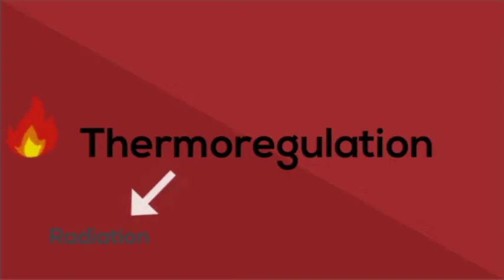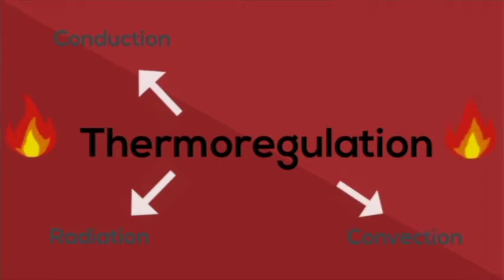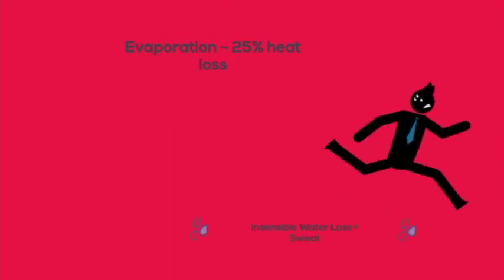The human body needs to maintain a fairly stable core body temperature, and does so through four forms of thermoregulation: radiation, conduction, convection, and evaporation. Evaporation accounts for 25% of heat loss through insensible water loss and sweating.